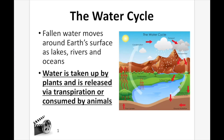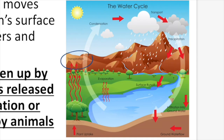Fallen water moves around earth's surfaces as lakes, rivers, and oceans. Water is taken up by plants and released via transpiration — that's the plants releasing water into the atmosphere — which can then go back via condensation to clouds. Animals can also consume the plants, in which case the liquid water would go into them.